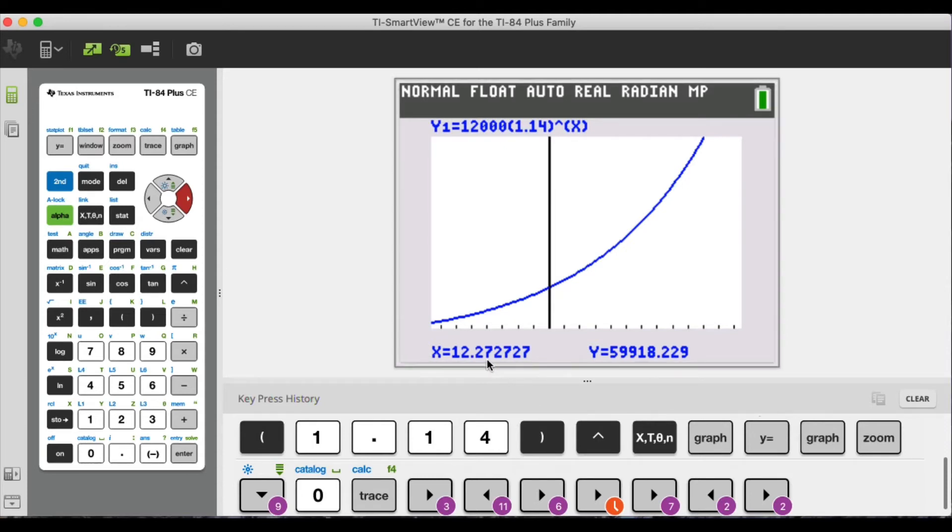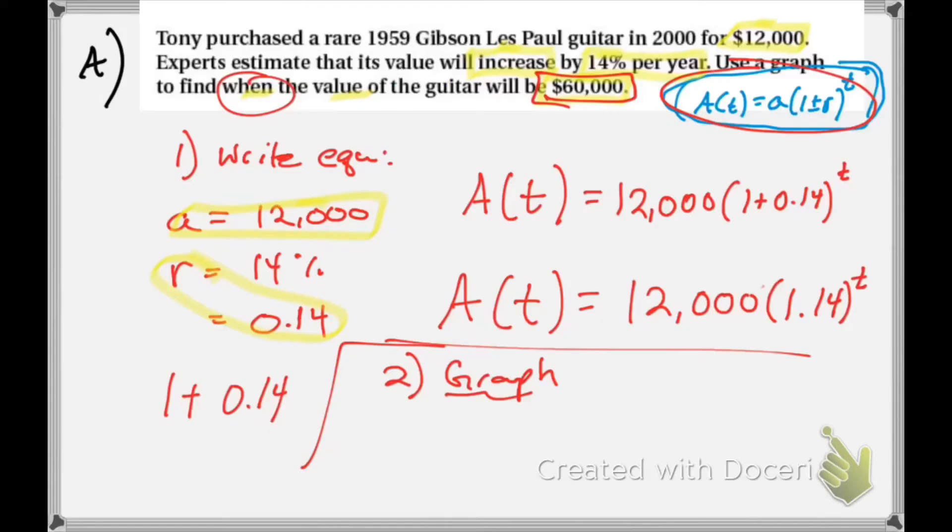Now the book has 12.29. It's close enough. I think they probably went over. Yeah, so about 12.3, 12.29 is what the book has. Now once you find the corresponding x value, which is t, my answer, it's approximately 12.29 years. So approximately 12.29 years for the value of the guitar to be $60,000, or that'd be around 2012, because I started in year 2000.